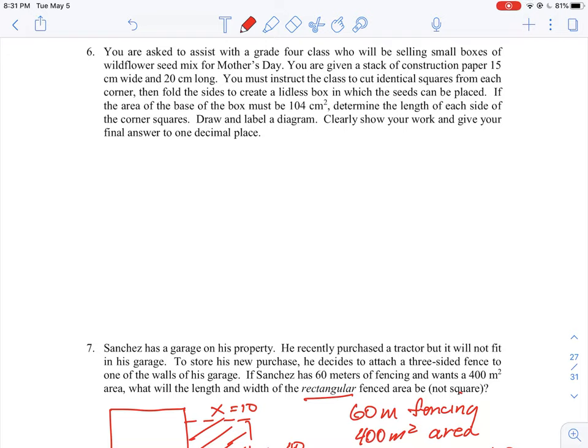The first thing we need to do is always sketch a picture when we're given something like this. So you're asked to assist with a class who will be selling small boxes of seed mix. You're given a stack of construction paper that's 15 centimeters by 20. So it's a rectangle so we can just draw in a rectangular shape.